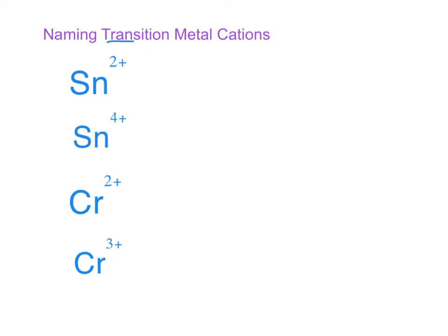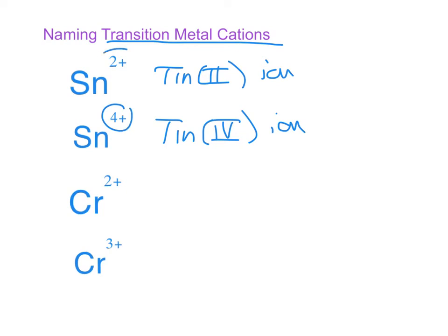But the transition metal cations, so tin, for instance, forms two plus and four plus. We can't call them both tin ion, or we wouldn't know which one we were talking about. So pretty simple solution. This one is going to be tin Roman numeral two ion, and this is going to be tin Roman numeral four ion. So the Roman numeral just represents the charge.